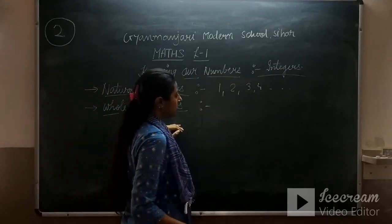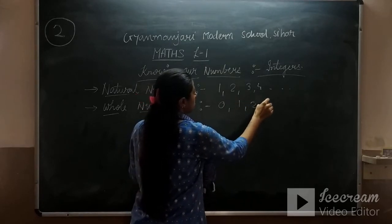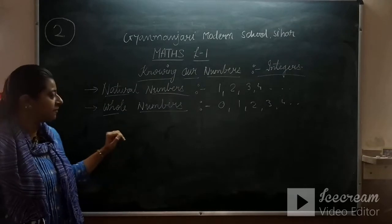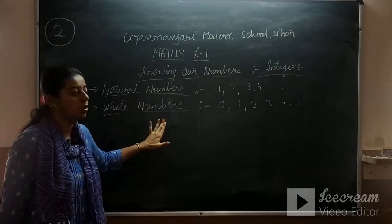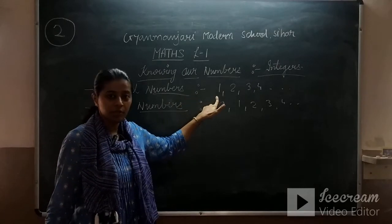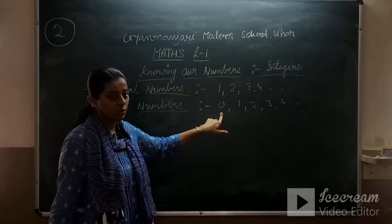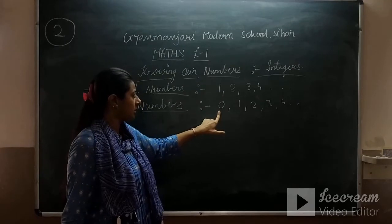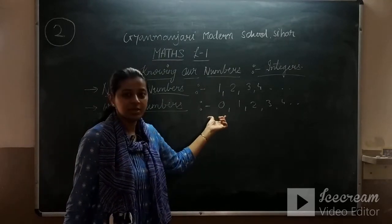Whole numbers always start from 0, then 1, 2, 3, 4 and that also ends up to infinity. The only difference between natural numbers and whole numbers is natural numbers always begin with 1 and whole numbers begin with 0. So in natural numbers, 0 is not included, and in whole numbers, 0 is included.